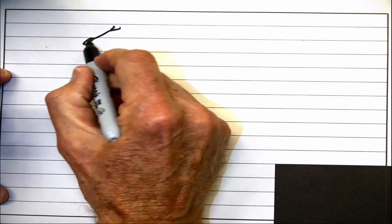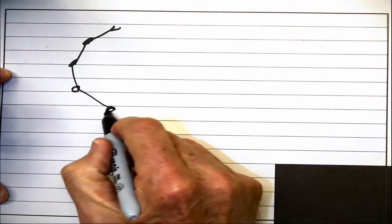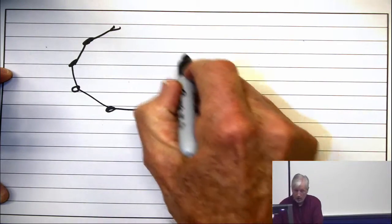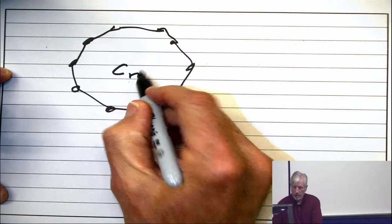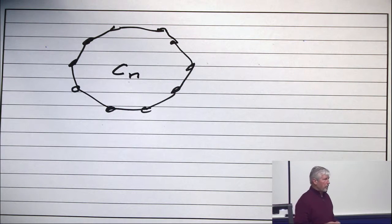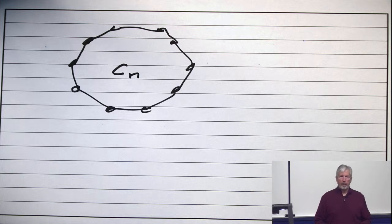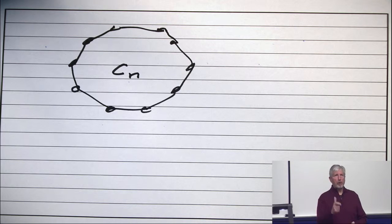Suppose you have a cycle, a big cycle. A CN. And now, my Markov process is you start on a vertex, any vertex.